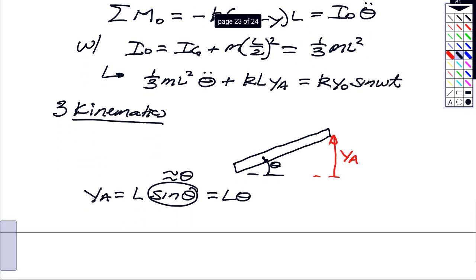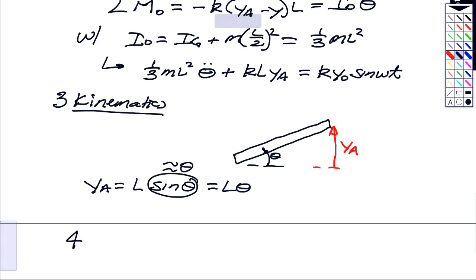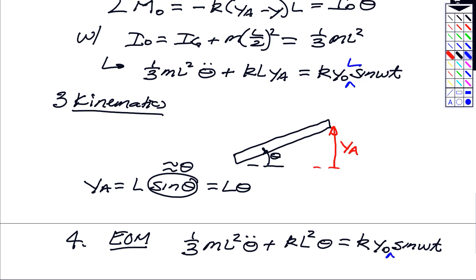So therefore, our equation of motion is going to be one-third m L squared theta double dot plus k L squared theta. Right hand side is k y naught sine omega t. And it looks like I've left off my L up here. So if you'll allow me to go back up here and insert an L, then there needs to be an L here.